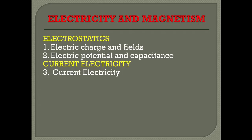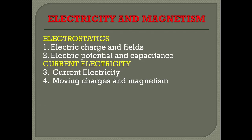The third chapter is current electricity, which is the study of electric charges in motion. In electrostatics we studied charges at rest; now we study how charges behave when moving and how we can make use of that in electronics. The fourth chapter is 'Moving Charges and Magnetism,' covering how moving charges produce a magnetic field — essentially the artificial production of magnetism.